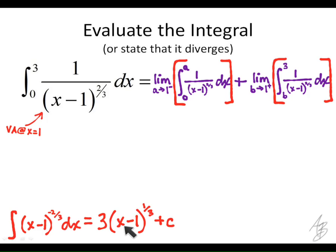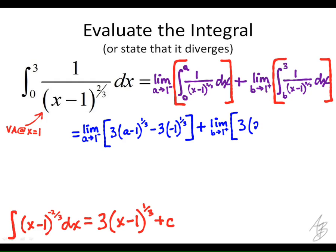And now that I've found the antiderivative, what I'm going to do is evaluate the antiderivative from 0 to a here and from b to 3 here. So I'm going to rewrite this then, and this is going to be kind of a long line.